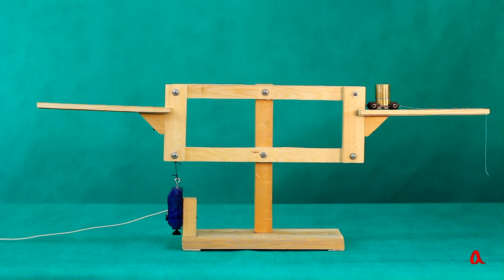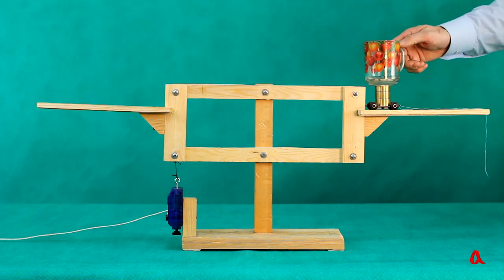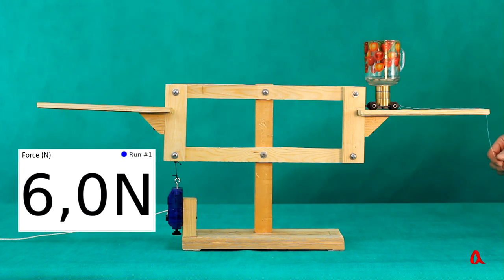In order to prevent the load from shaking during the movement along the right platform of the balance, we'll put it on a trolley. The weight of the trolley and the mug is 6 N.